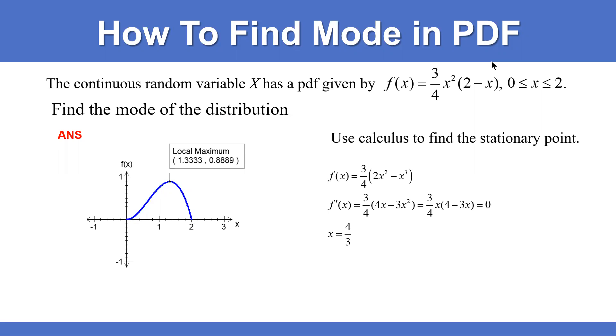So you have to derive it. You have to find the derivative of the function. The derivative is, you can see like that: (3/4)(4x - 3x²) = 0. So you have to find x, so the stationary point from this function is